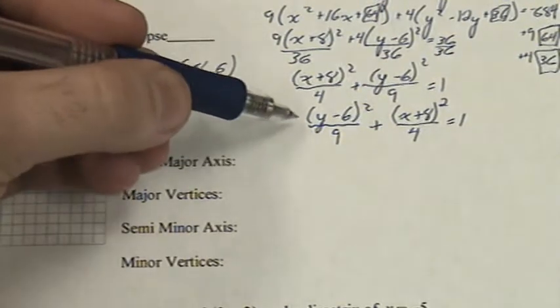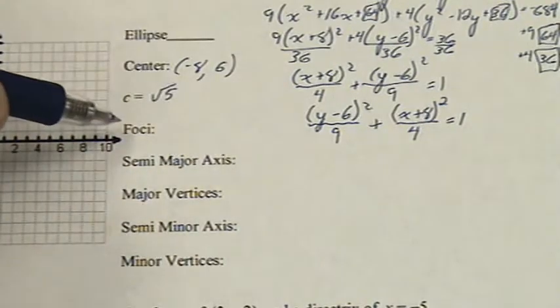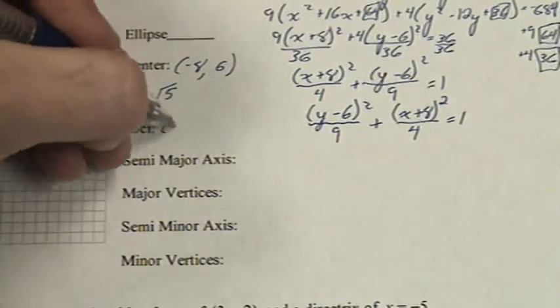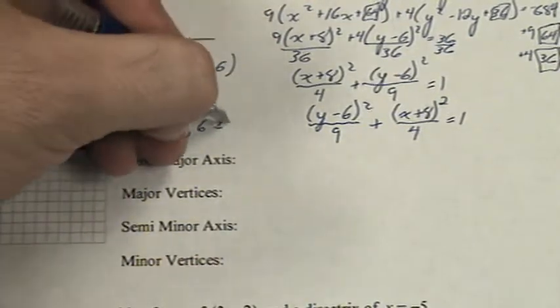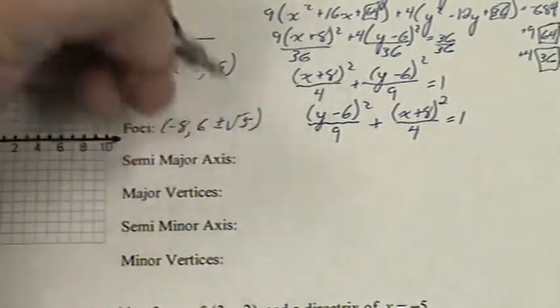Since y is the variable that was listed first, when we find the foci, we will be changing the y. Negative 8, comma 6, plus minus the square root of 5.